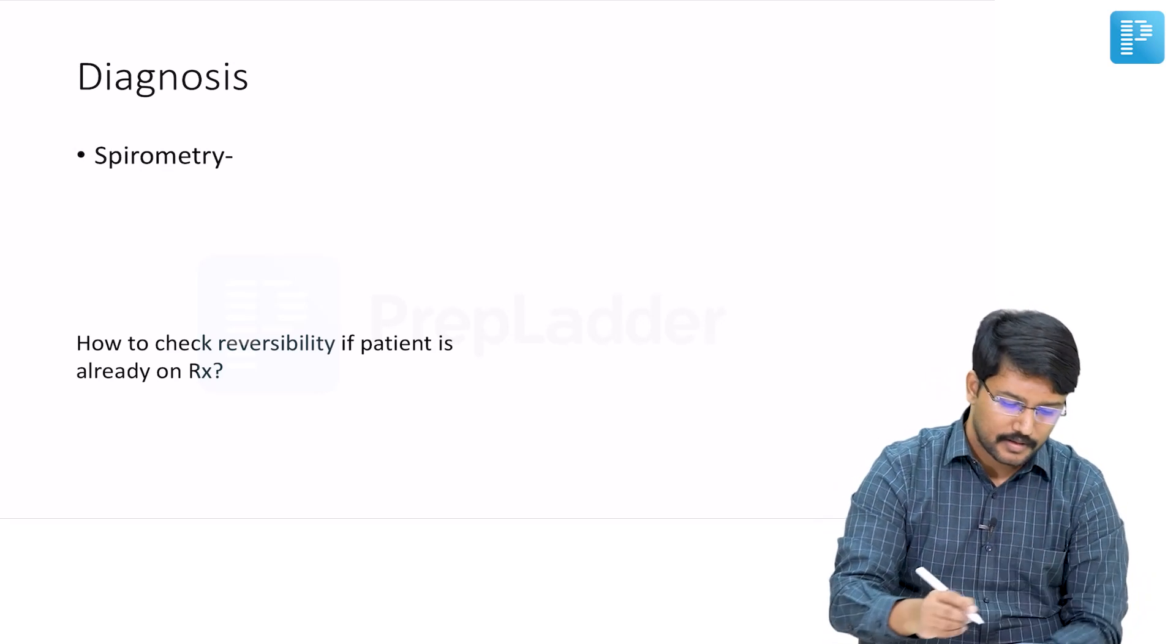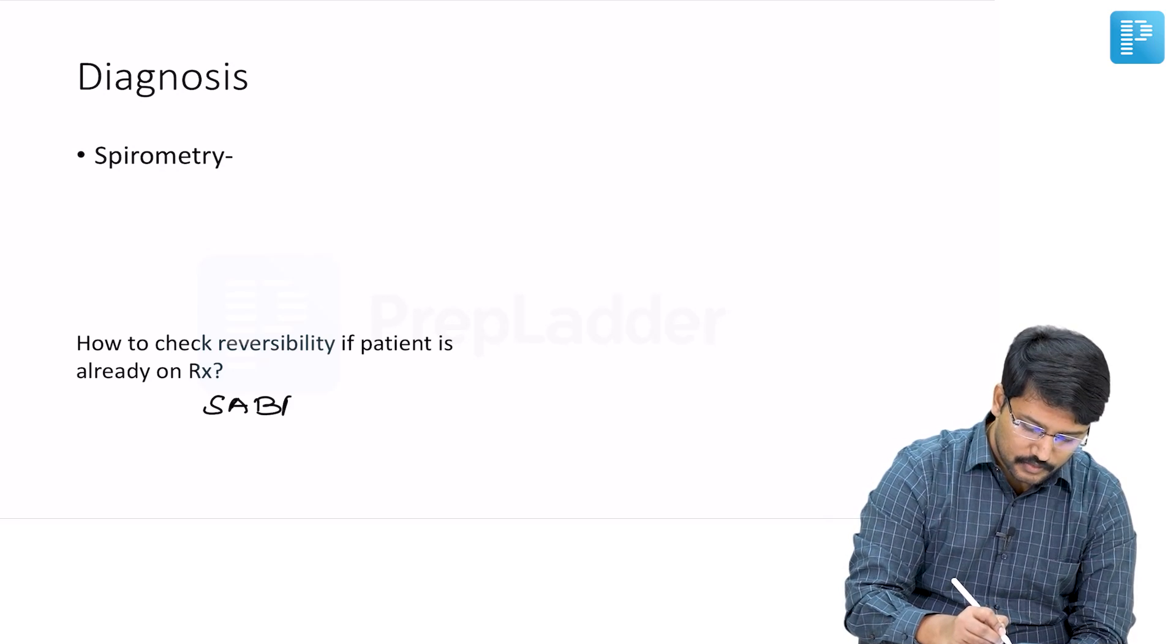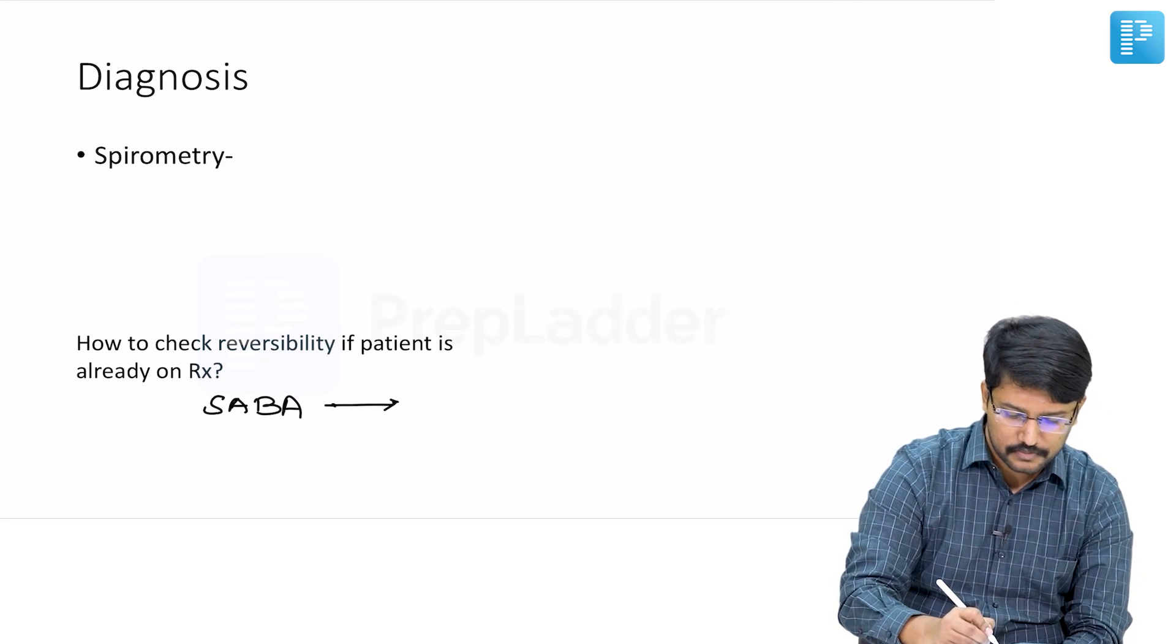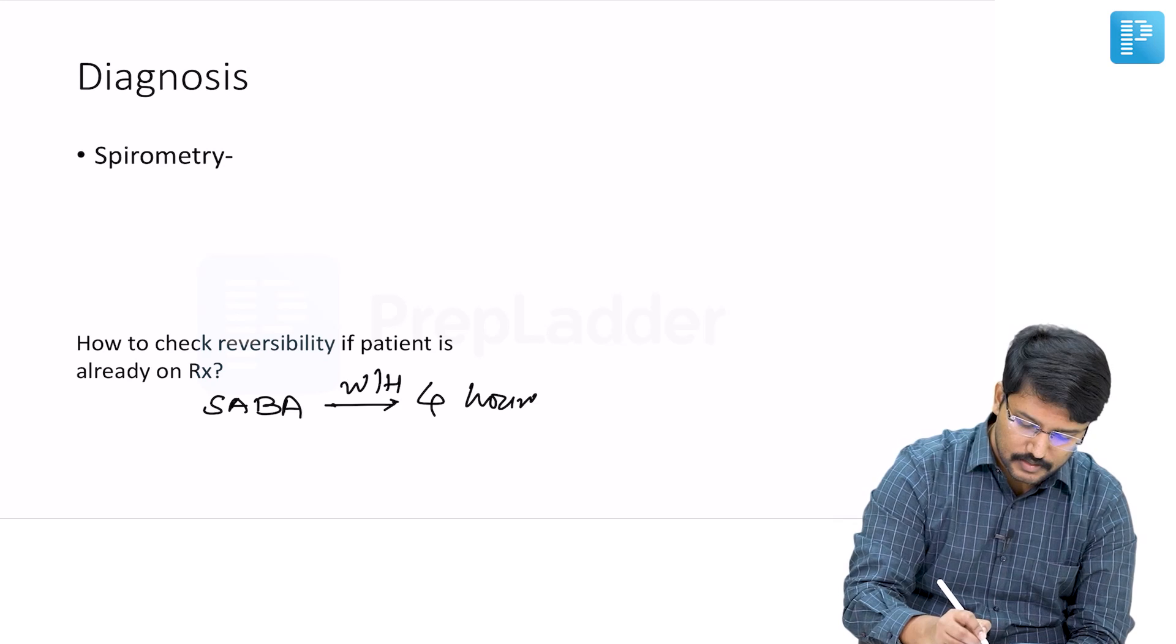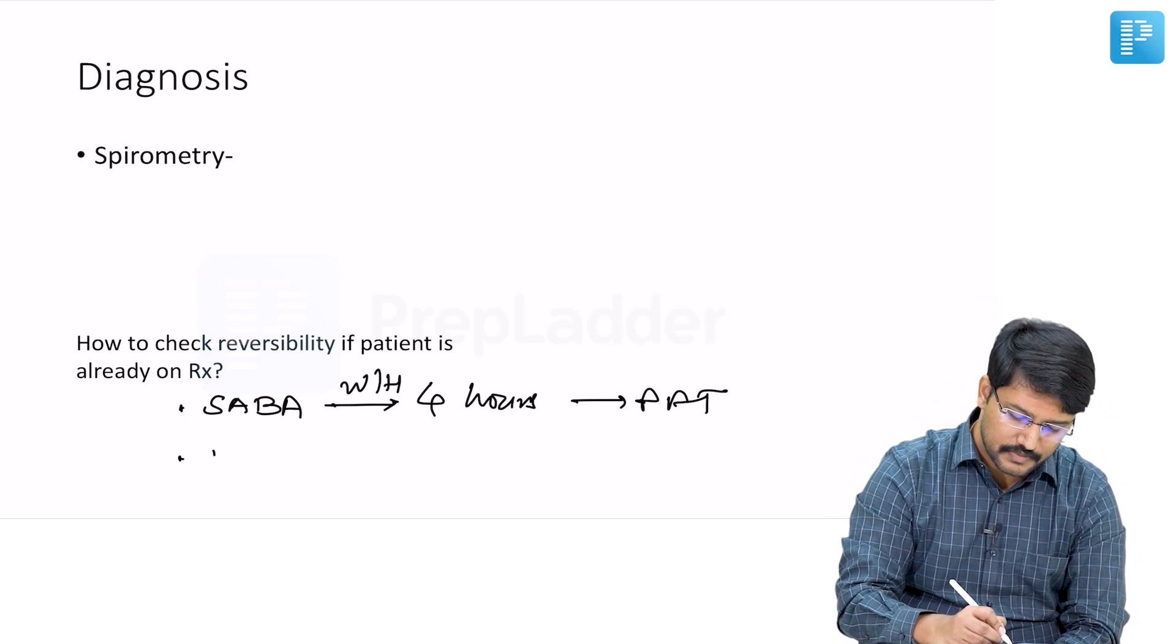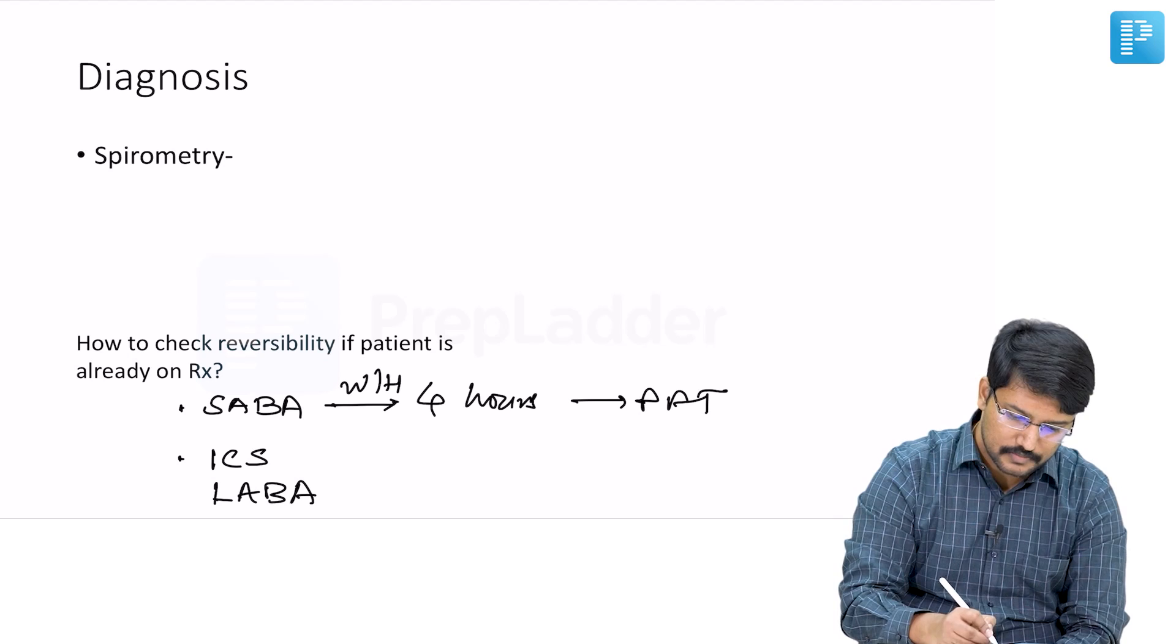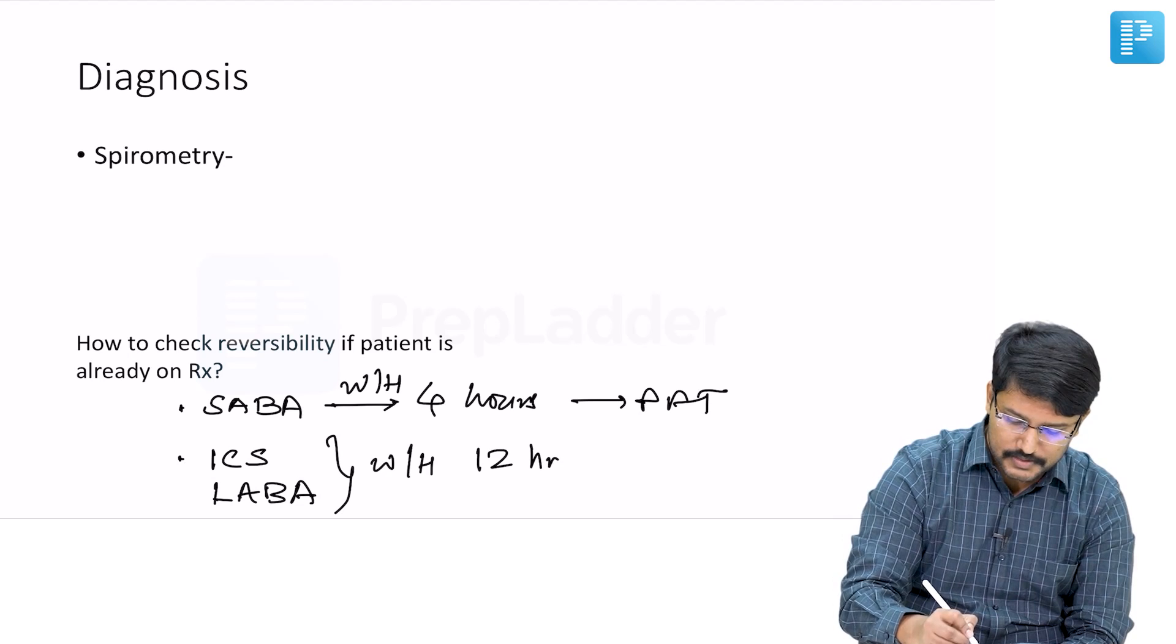If they are on short-acting beta agonist, you can give a break up—withhold it for 4 hours and then do the PFT and bronchodilator reversibility test. If they are receiving inhaled corticosteroids or long-acting beta agonist, in that case withhold for 12 hours.